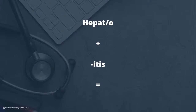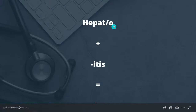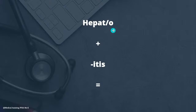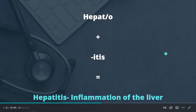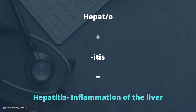Let's combine hepato and -itis. We already know -itis means inflammation of. Hepato refers to the liver. Since -itis begins with a vowel, we drop the O and it becomes hepatitis — the medical term for inflammation of the liver.